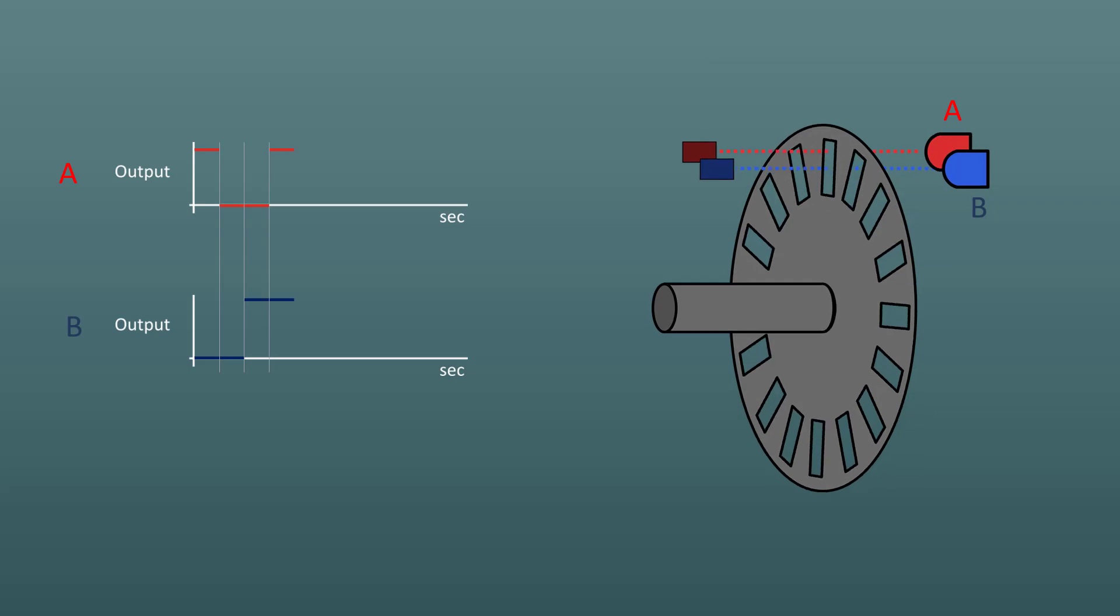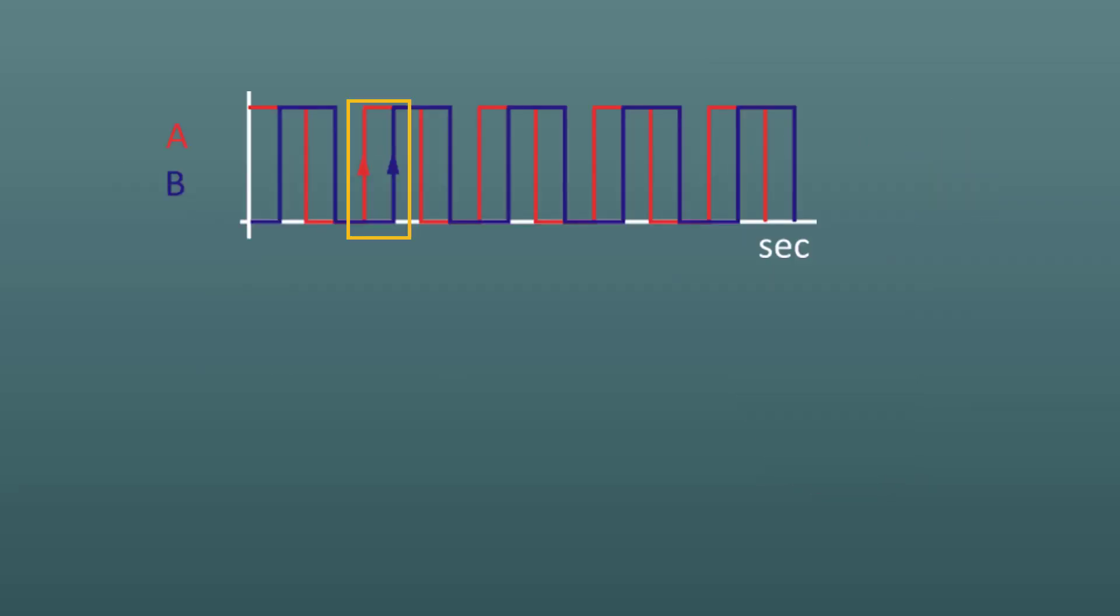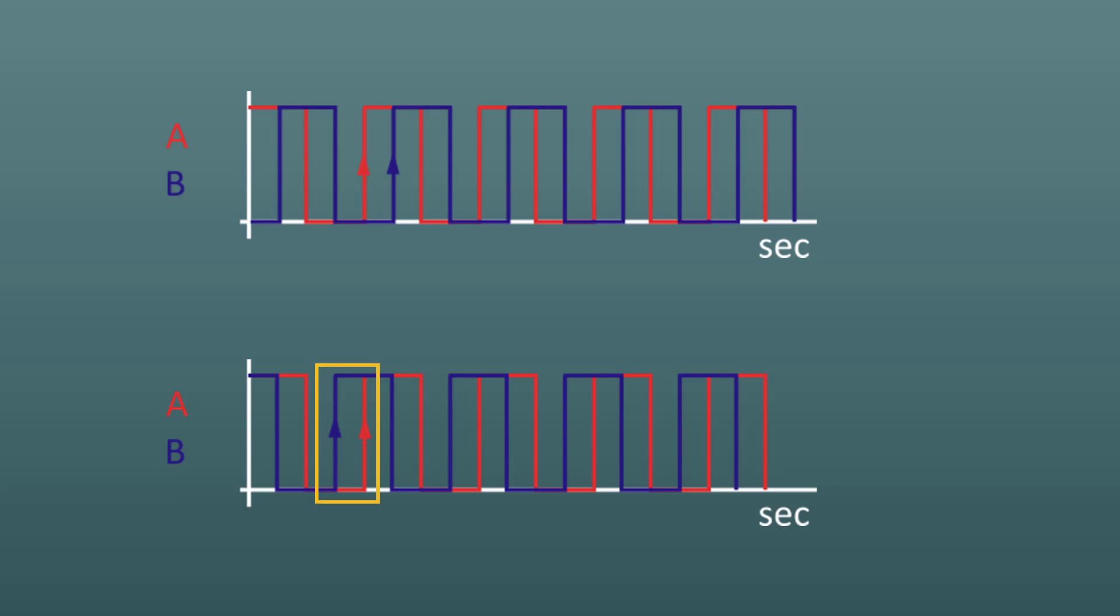The LED transistor pairs are labeled A and B. When the grating rotates clockwise, the A pulse occurs before the B pulse. When the grating rotates counterclockwise, the B pulse occurs first.